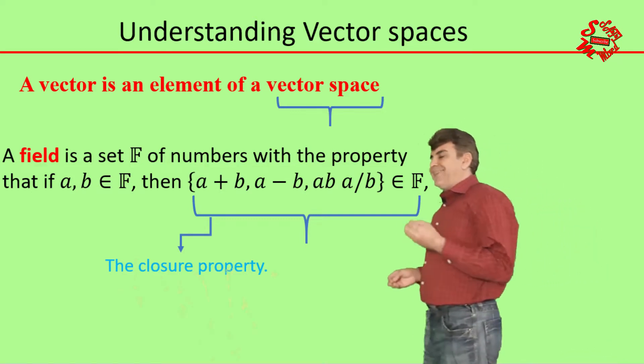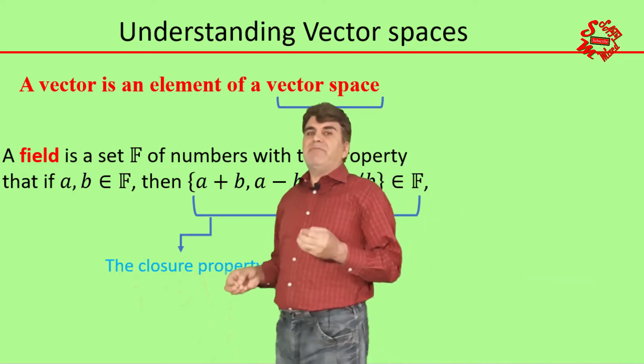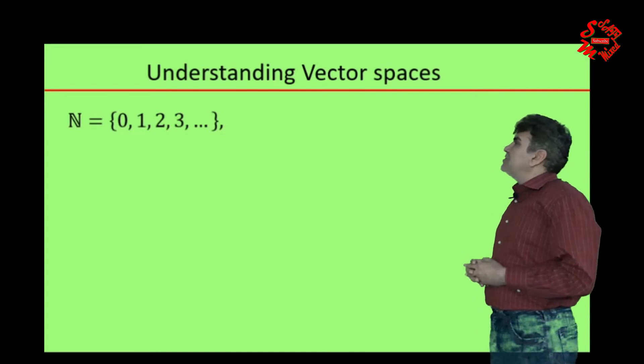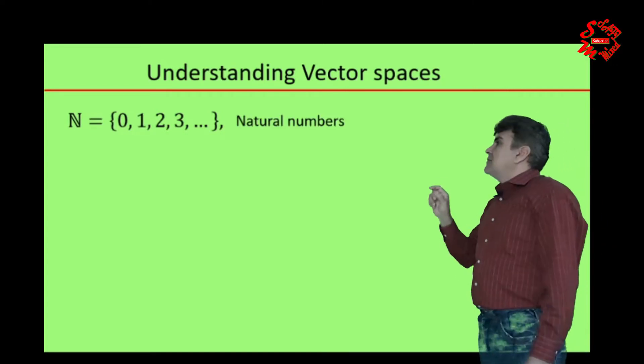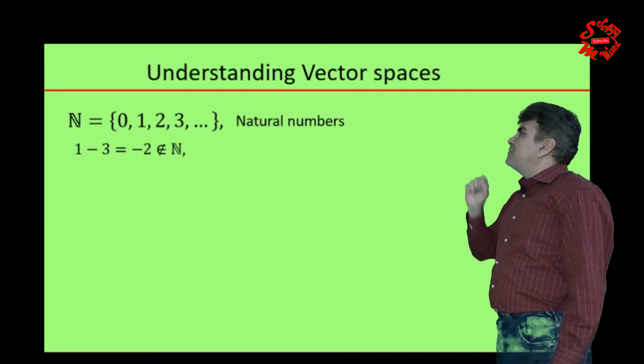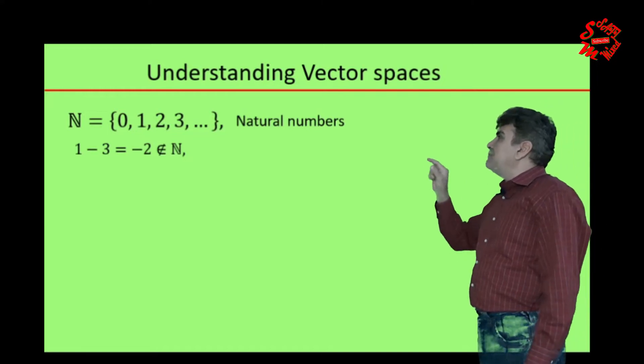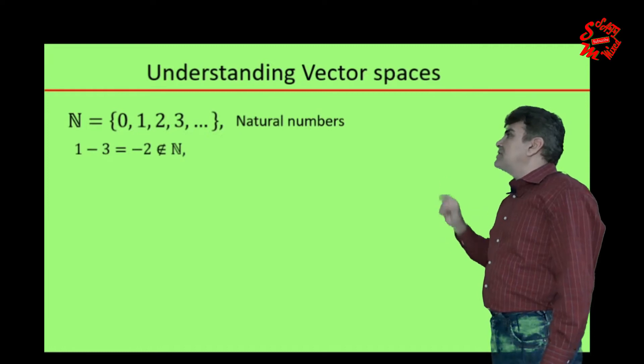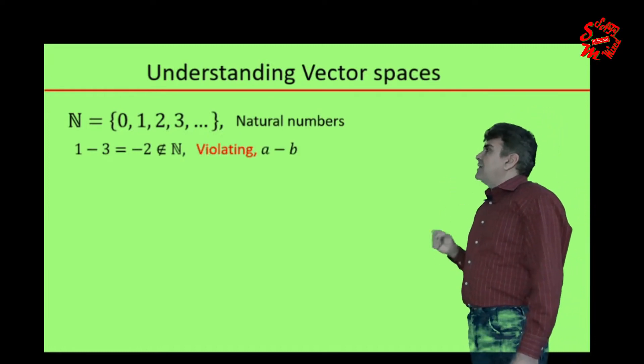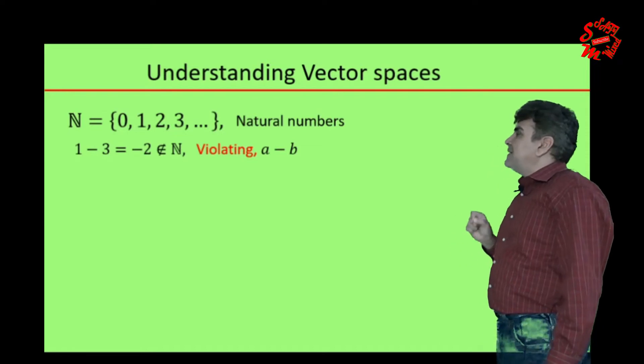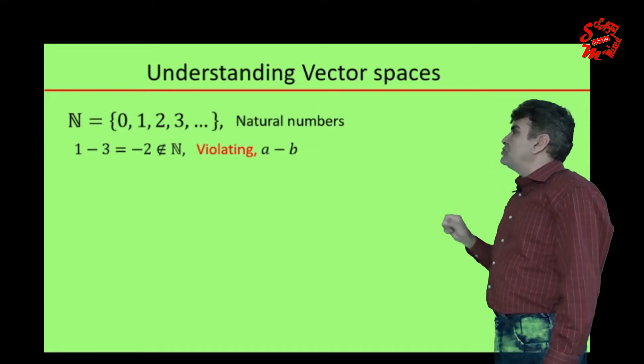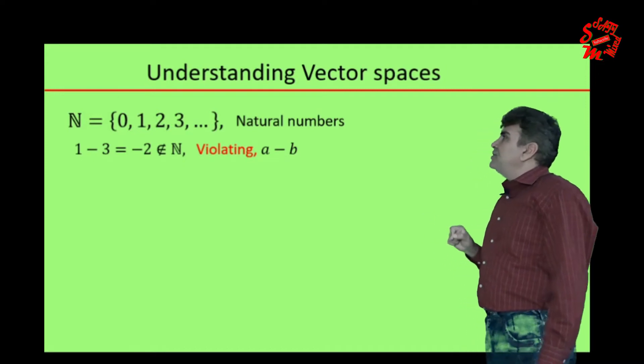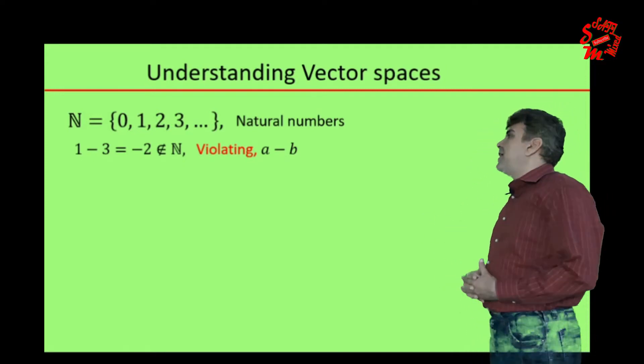In order to further clarify this idea, I begin from different sets. Consider the set N that represents all natural numbers. If I carefully look at this set, three and one belong to N, but one minus three equals minus two doesn't belong to N, and therefore violates the second element of the closure property as a condition for a set to be a field F.